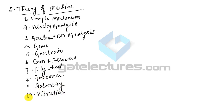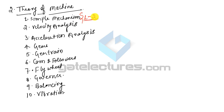Topic-wise analysis: Simple Mechanism contains 1 to 2 questions in every GATE exam. The most important topics here are inversions of mechanisms, Quick Return Motion Mechanism (QRMM), degree of freedom, toggle position, mechanical advantage, Grubler's equation, Kutzbach equation, and Grashof's law.